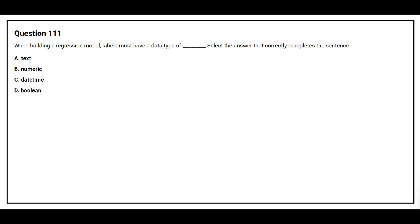Option number 111. When building a regression model, labels must have a data type of: Select the answer that correctly completes the sentence. Option A, text. Option B, numeric. Option C, date time. Option D, boolean. The correct answer is Option B, numeric.